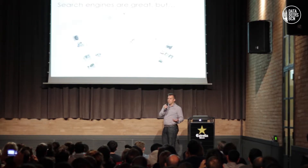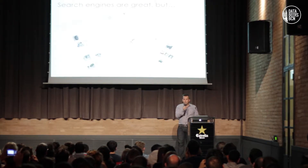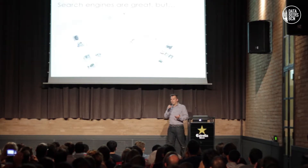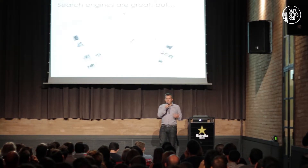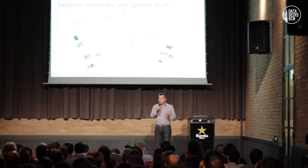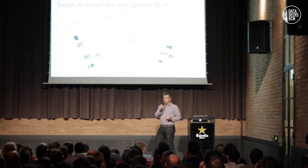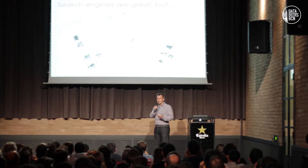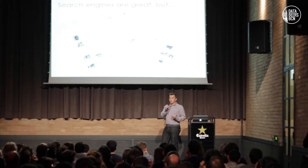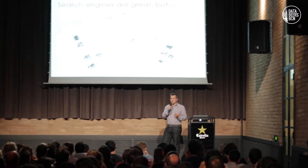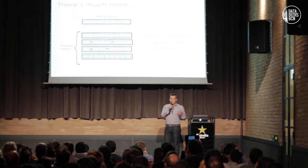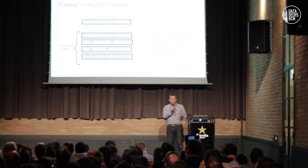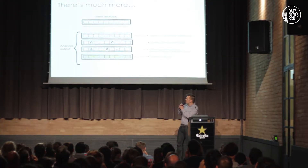There are search engines out there — there's Google, Google News, Bing — and they give you a lot of information. But mostly they work with text, and they work with the public data that's out there. If you want to work with different kinds of data, like video, or you work with your own archives, then things become a lot more complicated.